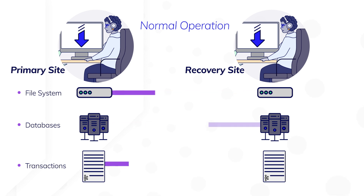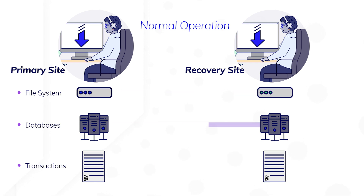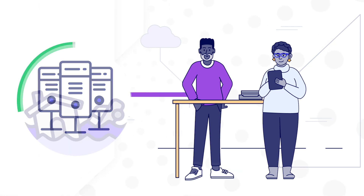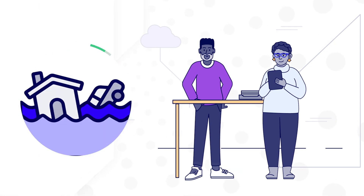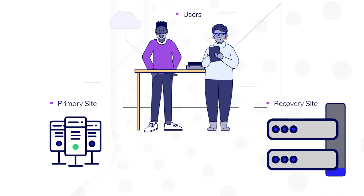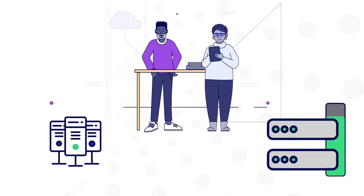The systems running on the recovery site are determined by your RTO. Having more systems running will lower downtime but will consume more resources. In the event of a major incident — say a flood at the primary site — the recovery site is started up, loaded with backed up data, and any non-checkpointed transactions are replayed. Finally, user traffic is rerouted to the recovery site where users can restart their sessions.